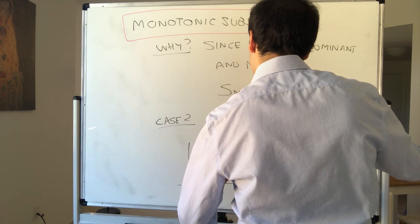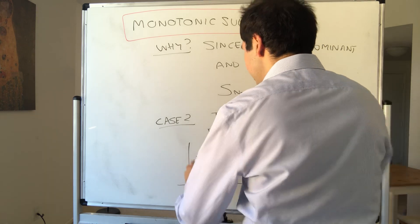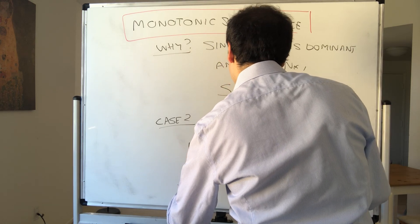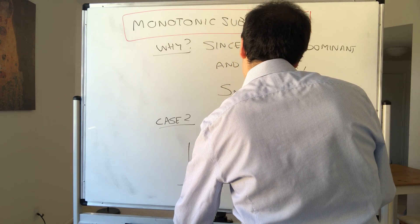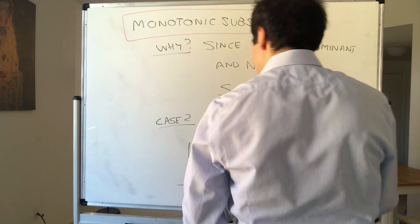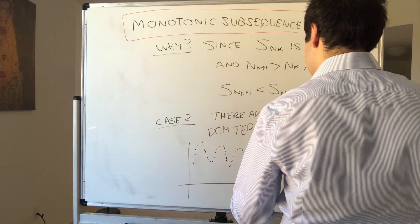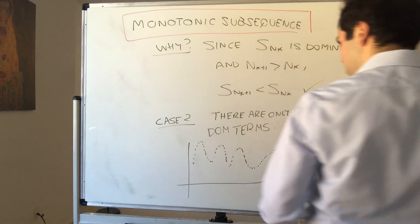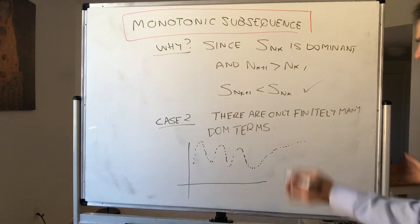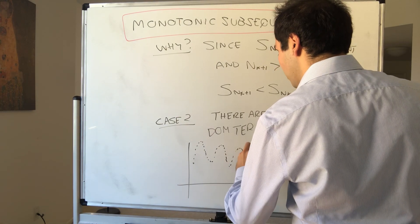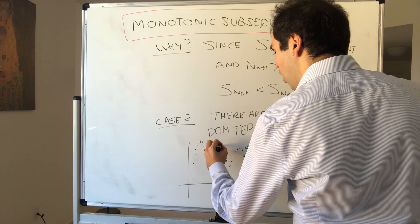Because what is going on? So suppose there are only finitely many peaks, like that. Like, maybe there's a peak here, and then a peak there. So yeah, maybe something like that. So there are finitely many peaks, and then there are no more peaks. Kind of like this, sort of.